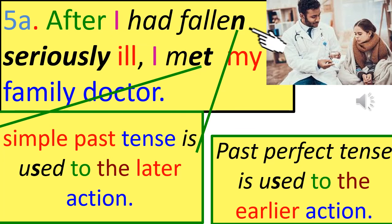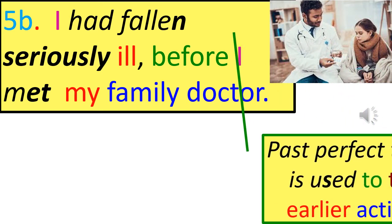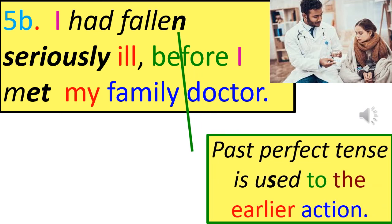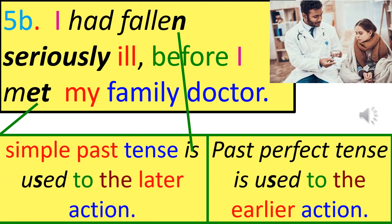The action which occurred earlier is expressed in the Past Perfect Tense, whereas the action which occurred later is expressed in the Simple Past Tense. Using 'before': 'I had fallen seriously ill before I met my family doctor.' Past Perfect Tense is used for the earlier action; Simple Past Tense is used for the later action.